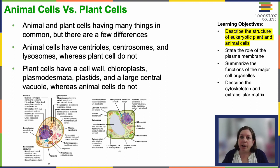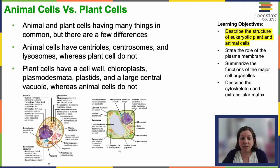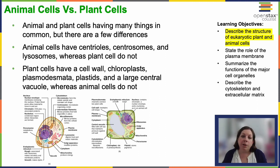Plant cells don't have those structures. We'll talk more later in the semester about the role of centrosomes and centrioles. Plant cells use a different scheme for cellular waste as opposed to lysosomes. Plant cells have a cell wall, chloroplasts, and something called plasmodesmata. They also possess plastids and a large central vacuole — a big storage space. Animal cells don't have those things.